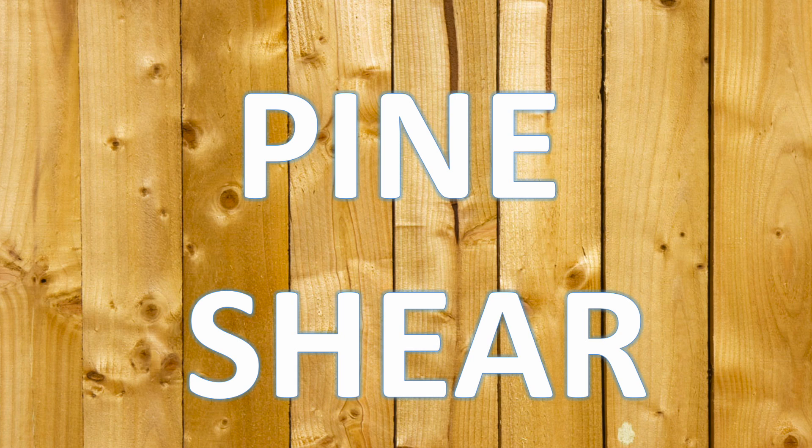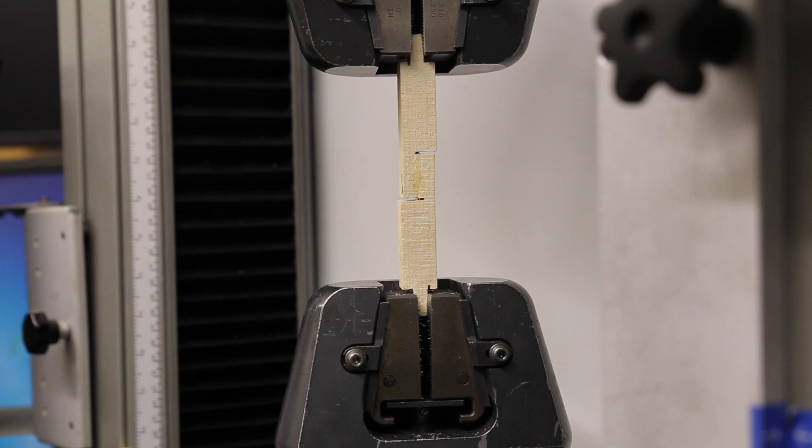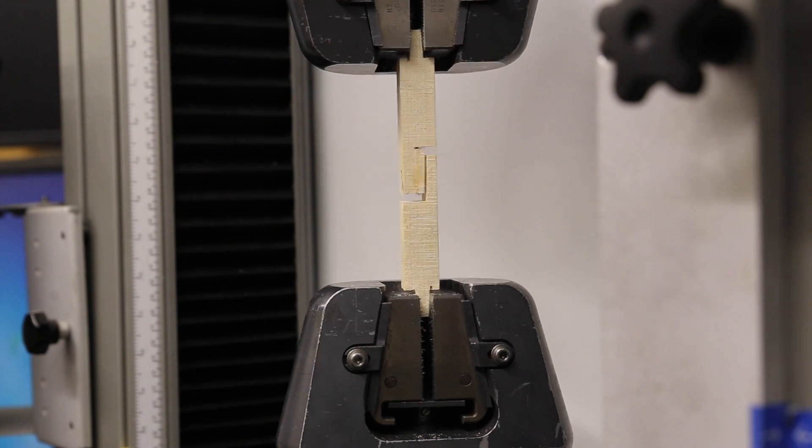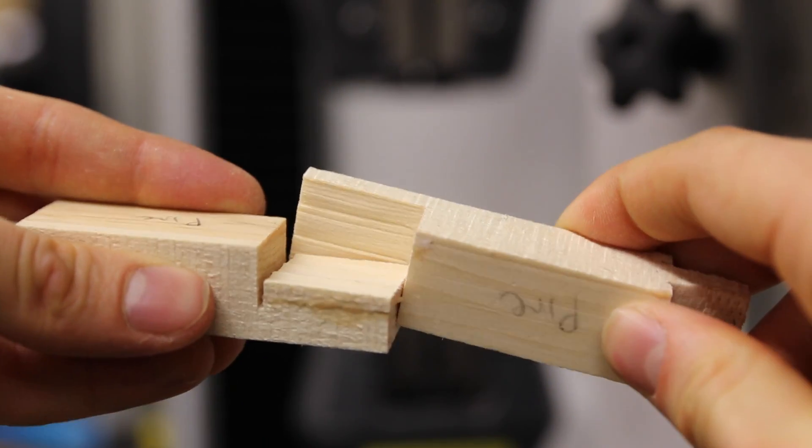All right, let's get to it. We'll start with the shear stress test with our first sample, pine. Believe it or not, this is actually sped up eight times. And it breaks. And look at that, the break is through the wood, not through the glued section.